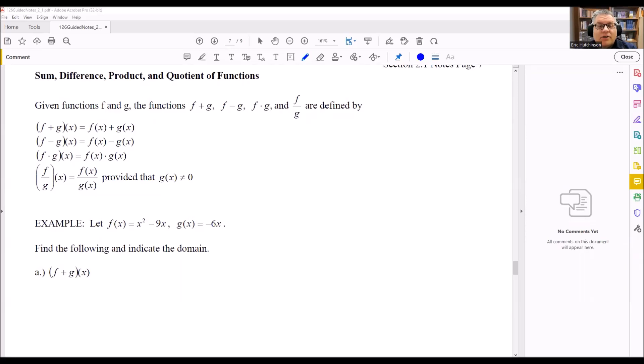We're going to talk about the sum, difference, product, and quotient of functions. The definitions for what all those mean is going to be right here. Really what it means is whatever sign you see inside that it gives you, that means it tells you what you're doing to the actual functions.